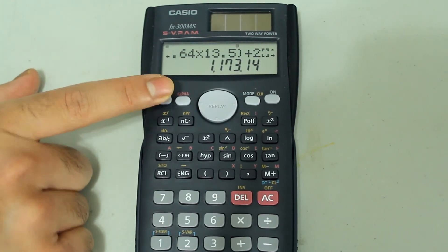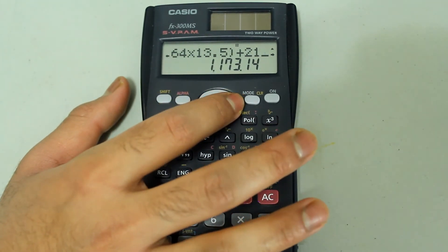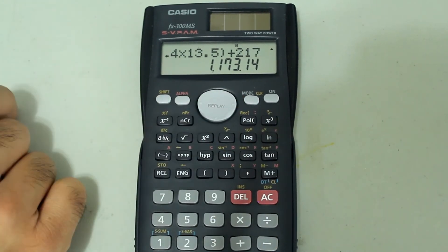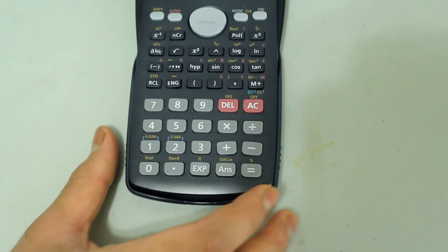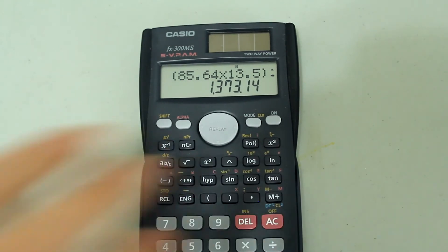Now I want to deactivate my insert feature. So I just press shift and the delete button again. And now I have 217 instead of just 17. Press equals and we have our new answer.